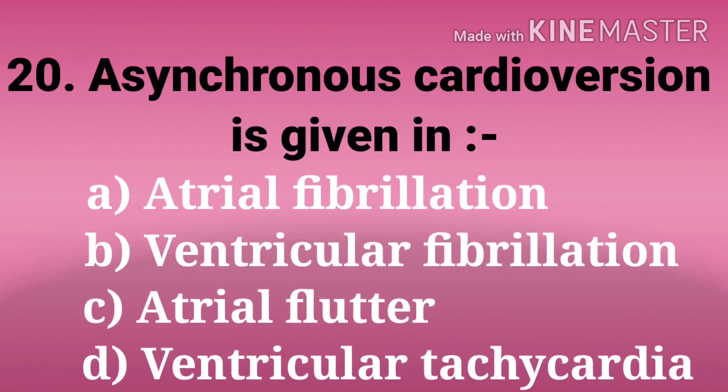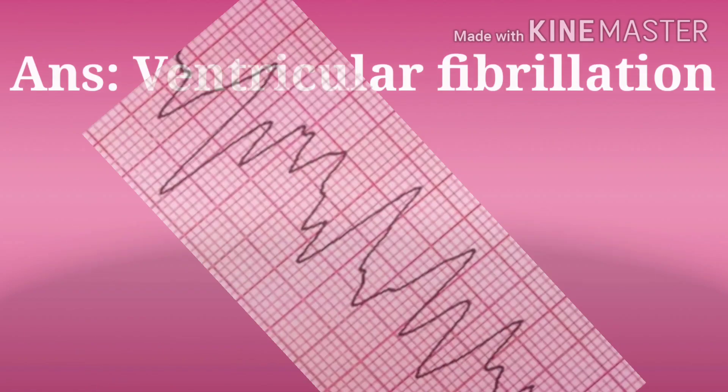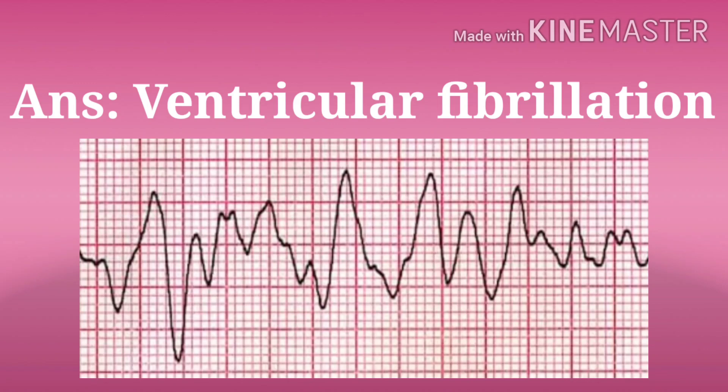Next question: asynchronous cardioversion is given in. The options are atrial fibrillation, ventricular fibrillation, atrial flutter, and ventricular tachycardia. And the answer is ventricular fibrillation. Ventricular fibrillation is a life-threatening heart rhythm that starts in the bottom chambers of the heart and can be triggered by a heart attack.